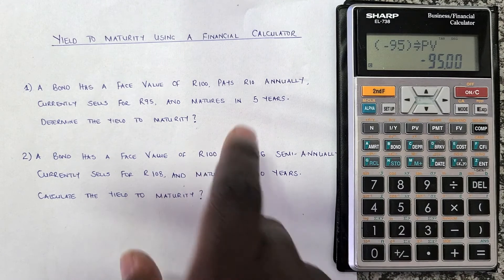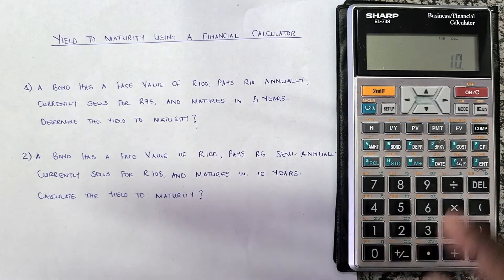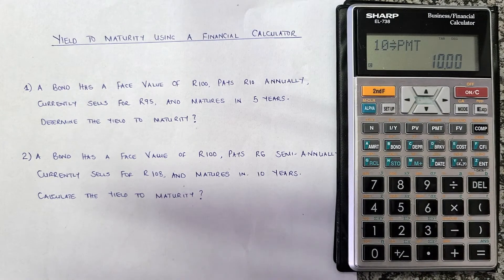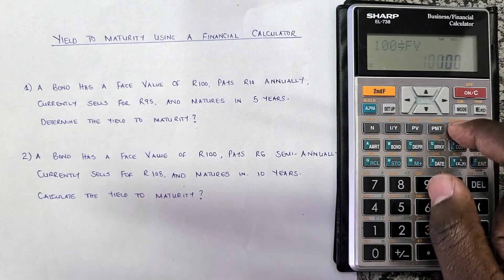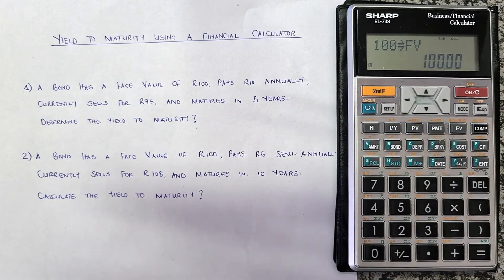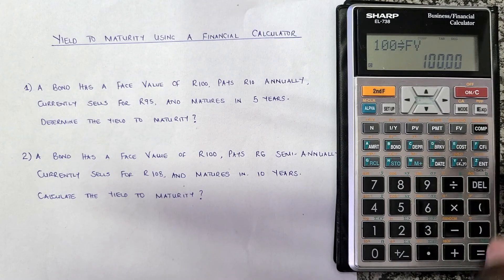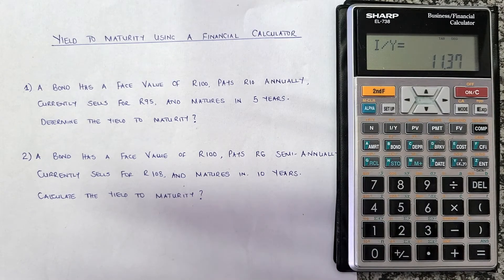Then I enter the payment: the bond pays 10 rand annually, so I press 10 and then PMT. My future value is the face value, which is 100 rand, so I press 100 and then FV. I've now entered all the information needed.